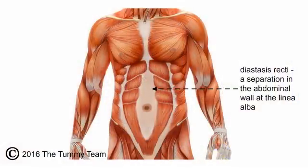Diastasis recti often contributes to a lot of pain and dysfunction that we're dealing with on a daily basis and don't even know that it's related to core weakness or core problems. Diastasis is a separation of the abdominal wall — where the connective tissue that runs from the bottom of the ribcage to the top of the pubic bone pulls apart and separates, leaving the internal corset muscle in a place where it's ineffective and inactive.